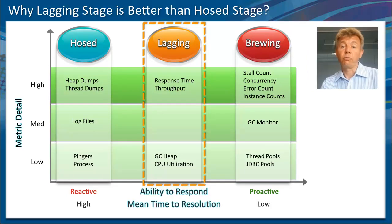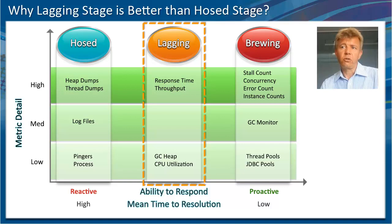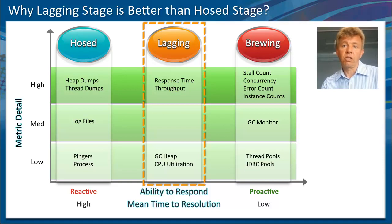If you are monitoring application performance issues as part of the lagging stage, most users are already impacted. Slow response times have already been occurring, and users might be calling the help desk already. In such cases, you would have set up your APM alerts and dashboards to monitor response times and throughput metrics. There's nothing wrong with that — it's still a very good way of monitoring.